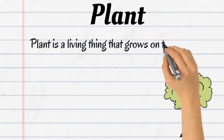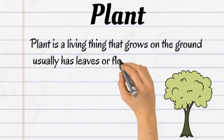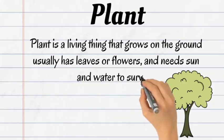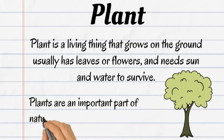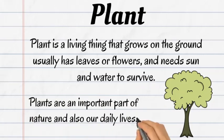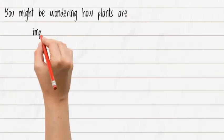A plant is a living thing that grows on the ground, usually has leaves or flowers, and needs sun and water to survive. Plants are an important part of nature and also our daily life.